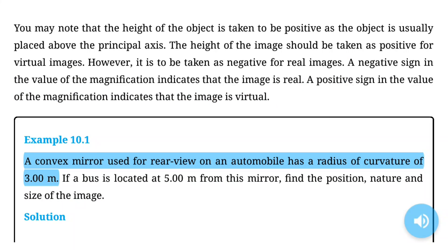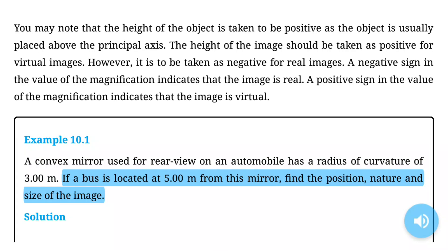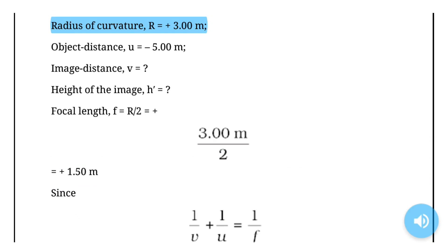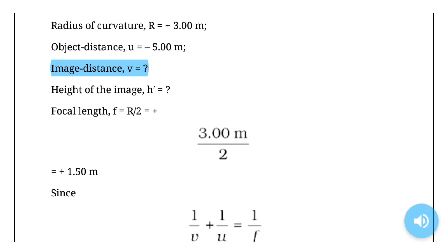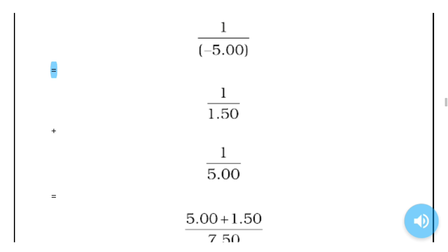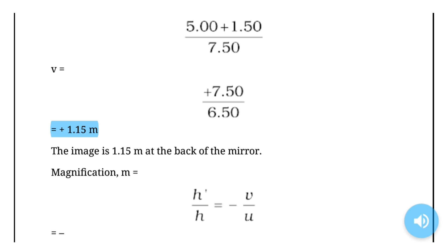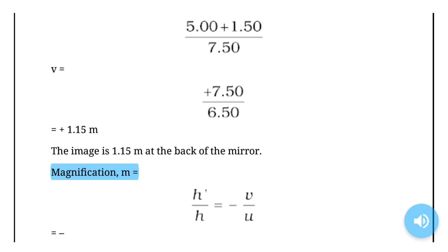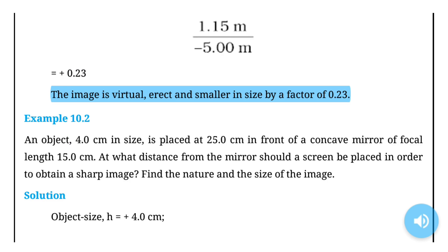Example 10.1: A convex mirror used for rear view on an automobile has a radius of curvature of 3.00 m. If a bus is located at 5.00 m from this mirror, find the position, nature, and size of the image. Solution: Radius of curvature R = +3.00 m; object distance u = −5.00 m; focal length f = R/2 = +1.50 m. The image is at +1.15 m at the back of the mirror. Magnification m = +0.23. The image is virtual, erect and smaller in size by a factor of 0.23.